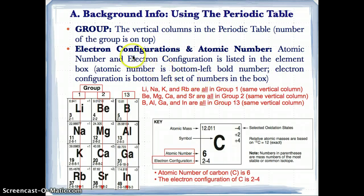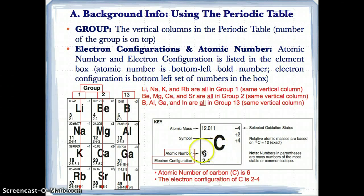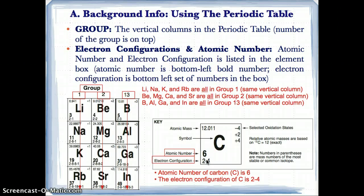Now, in addition to that, we should know by now how to find electron configurations and atomic number from the periodic table element boxes. The atomic number and the electron configuration are both listed in the element box. The atomic number is the bottom bold left number, and the electron configuration is the bottom left set of numbers in the box with the dashes between them.